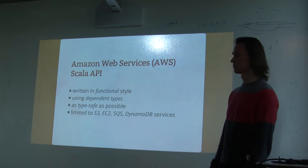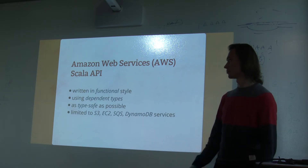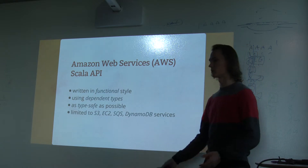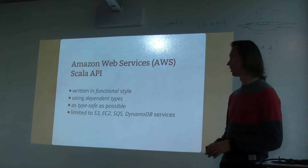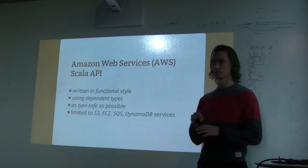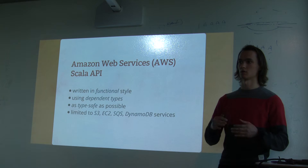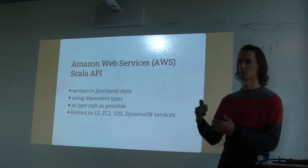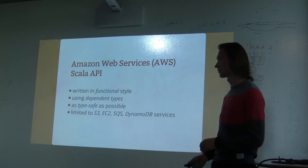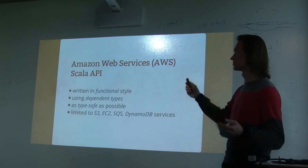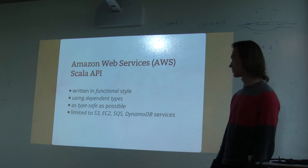We want to develop an Amazon Web Services Scala API library, written in functional style using dependent types. The main goal is to make it as type-safe as possible. We want to use as many advantages of the Scala programming language as possible to make the product very safe and provide theoretical correctness as much as possible. We are not going to cover all Amazon services — only the most needed ones.